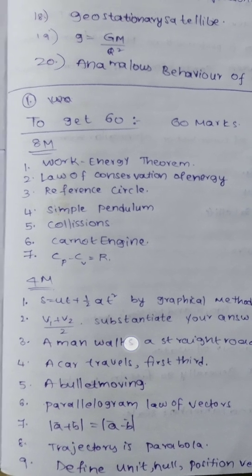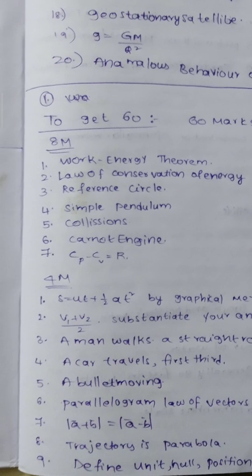For the 4-mark questions, the distribution is as follows: laws of motion has 5 questions, system of particles has 5 questions, gravitation has 4 questions, mechanical properties of solids has 1 question, and thermal properties has 4 questions. The next set will have 25 questions total.